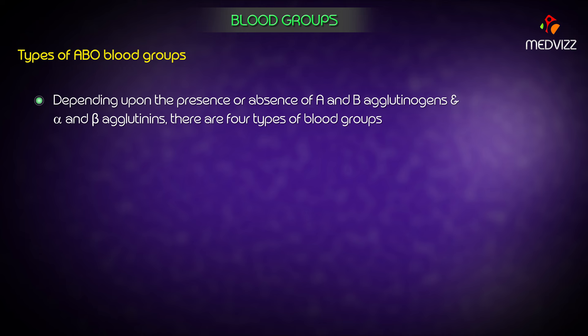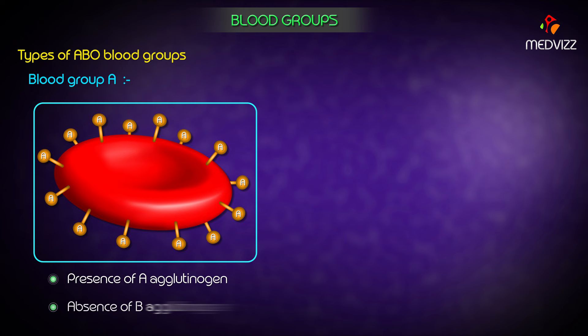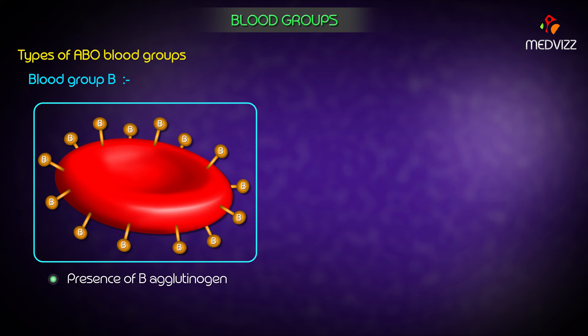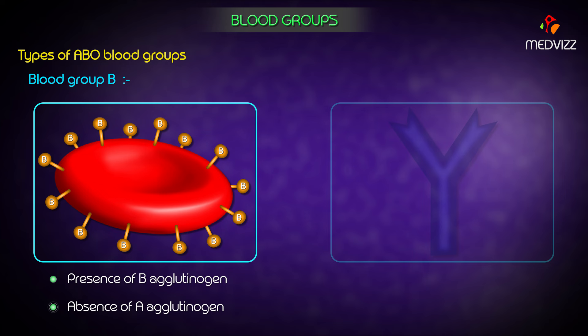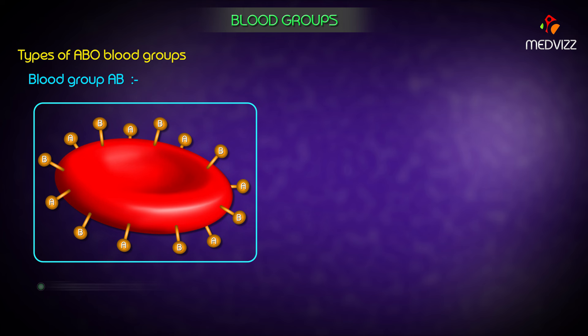There are four types of ABO blood groups based on the presence or absence of A and B agglutinogens and alpha and beta agglutinins. Blood group A is characterized by presence of A agglutinogen and absence of B agglutinogen on the RBC membrane, with anti-B agglutinin present and anti-A agglutinin absent from the plasma. Blood group B is characterized by presence of B agglutinogen and absence of A agglutinogen, with anti-A agglutinin present and anti-B agglutinin absent from the plasma.